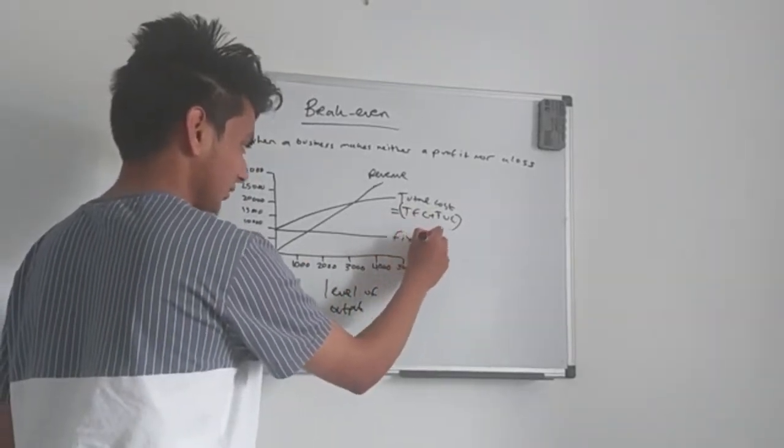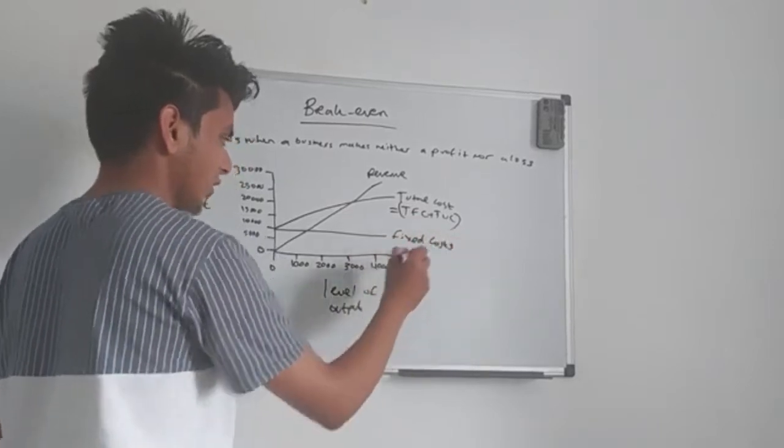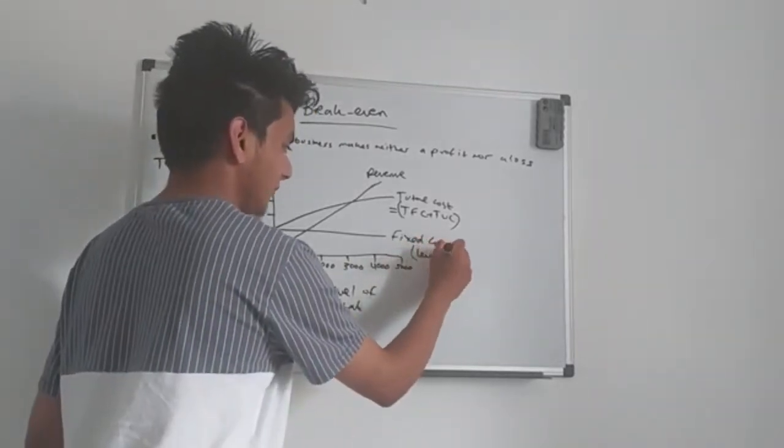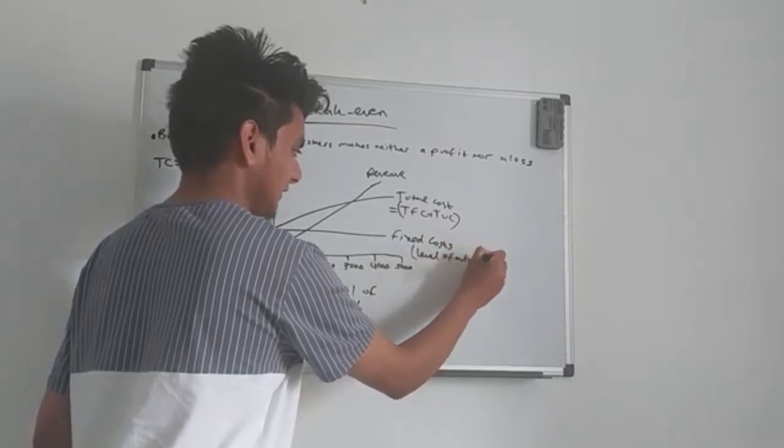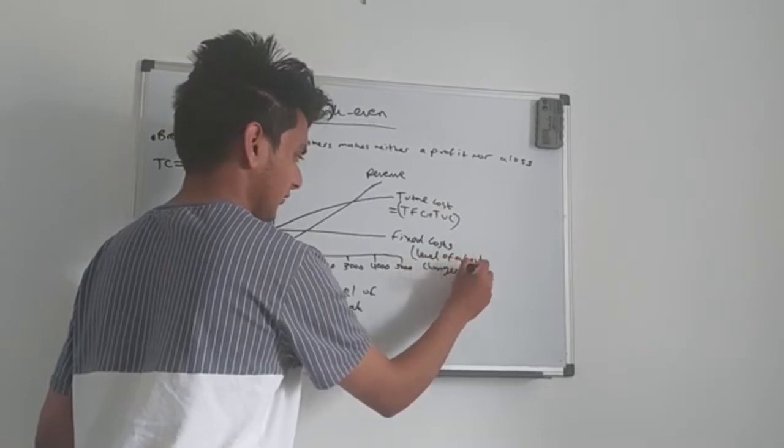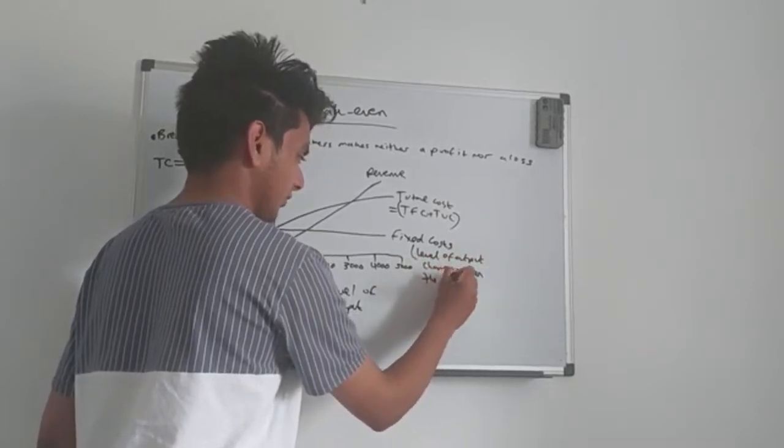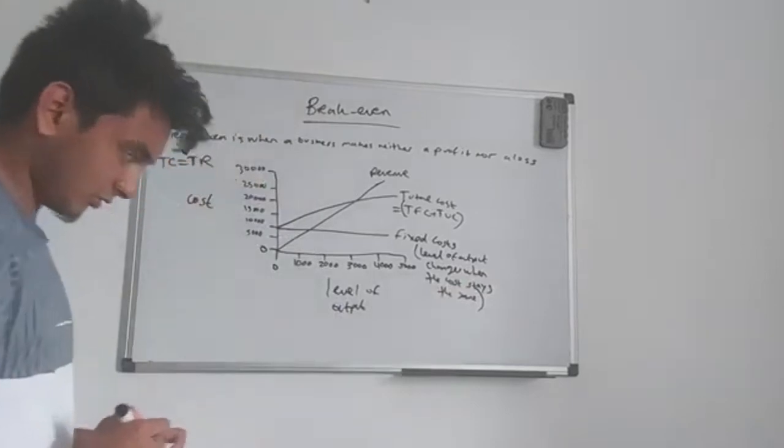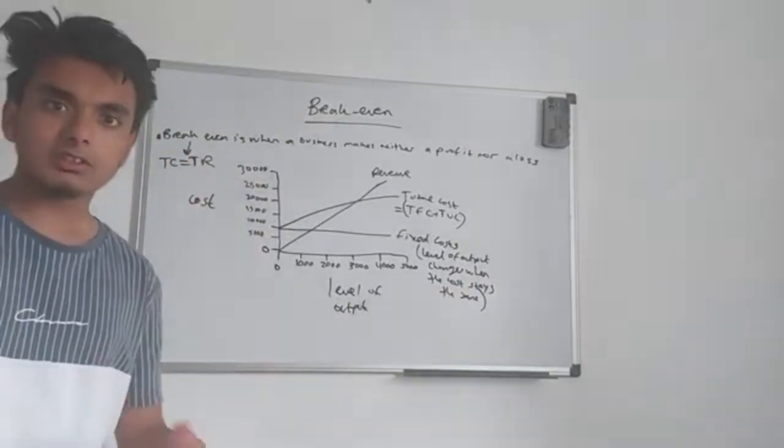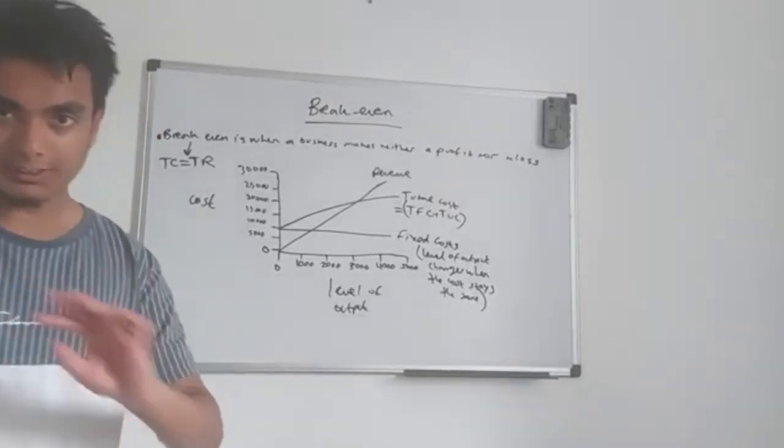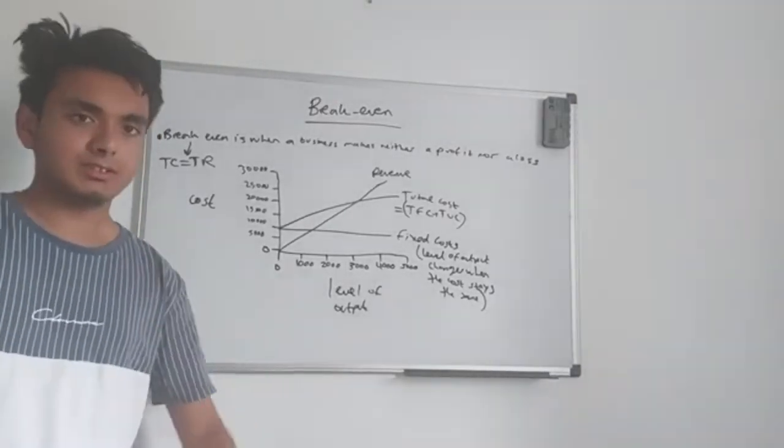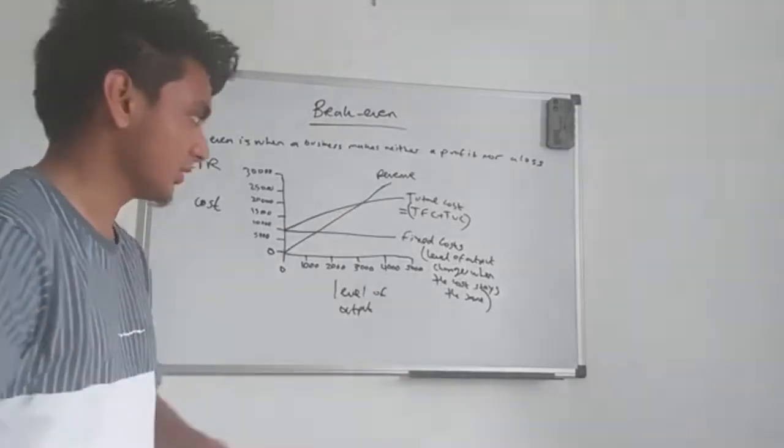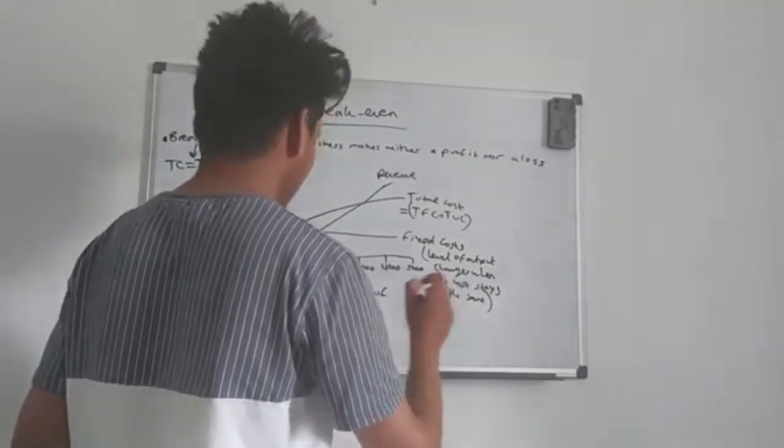And this is your fixed costs. So it's when the level of output changes when cost stays the same. So the costs of production will stay the same regardless of how many units of output are being produced. For example, one unit, two units, three units, the costs will just stay the same, it won't change. So that's your fixed costs. I'll give you some examples.